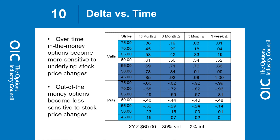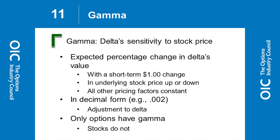Over time, deltas change. The out-of-the-money options, whether calls or puts, become far less sensitive to stock changes. For most investors, gamma – the change in delta – is somewhat secondary. If you've got an at-the-money option where the call and put delta are both about 50, and the stock goes up a lot and the call delta goes from 50 to 90, gamma will tell you how much the delta is going to change as the stock moves appreciably. It's a little too obscure for most investors, but it is one of the pricing factors.